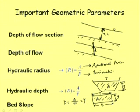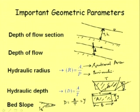Another important parameter is bed slope — the slope of the bed along the direction of flow. When we have a trapezoidal channel, two slope terms arise: the side slope (the slope of the side walls) and the bed slope (the slope along the direction of flow). So in this sort of channel, we have two slopes — bed slope and side slope.